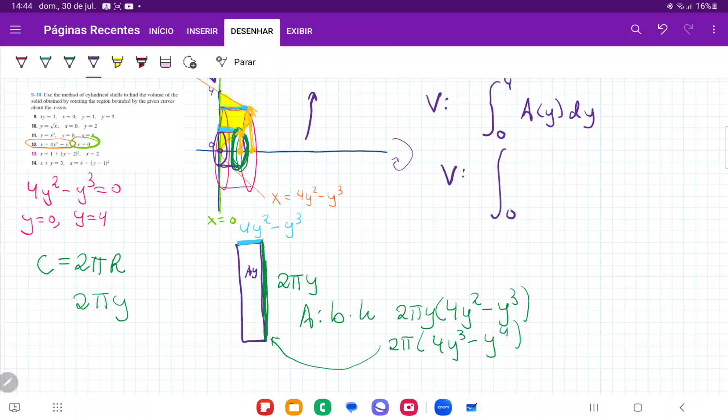Therefore the volume is going to be the integral from zero to four of A(y) dy and A(y) is 2 pi that goes outside because the constant times 4 y cubed minus y to the power of 4 and all this times dy.